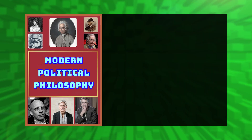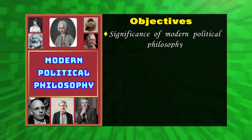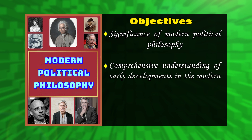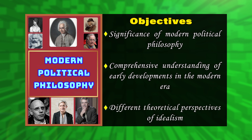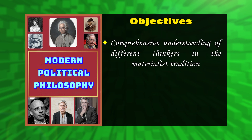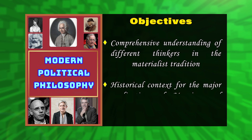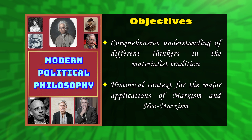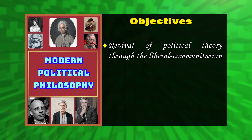The course has been designed with certain objectives: to grasp the significance of modern political philosophy, to attain a comprehensive understanding of early developments in the modern era, to comprehend different theoretical perspectives of idealism, to gain a comprehensive understanding of different thinkers in the materialist tradition and modernization, and to establish a historical context for the major applications of marxism and neo-marxism.